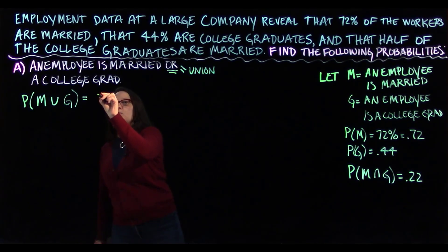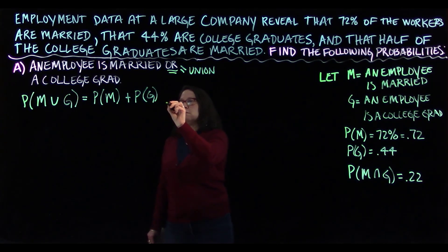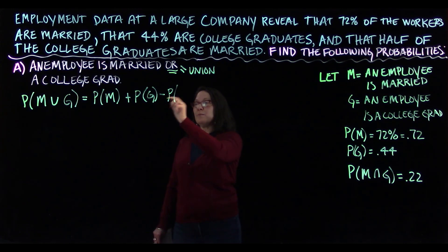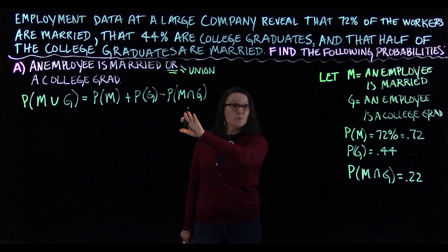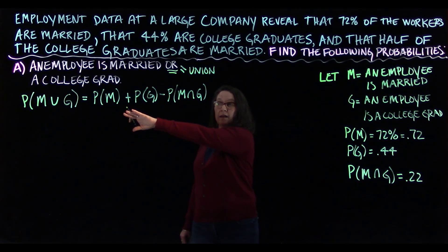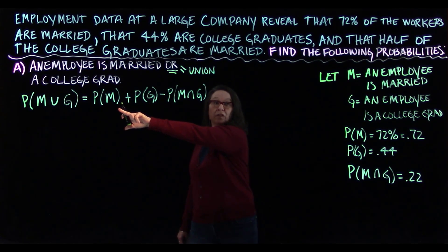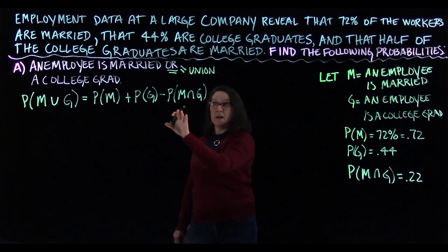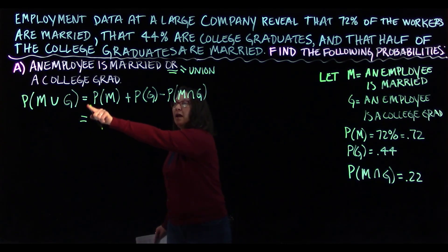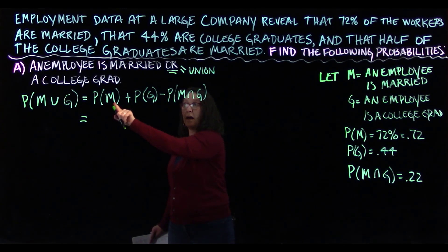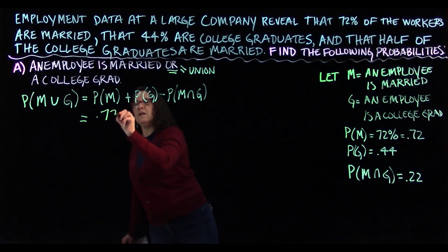From section 3.8, we add those probabilities together, but we've counted the probability of the married college graduates twice. So we have to subtract that overlap out once. That gives us the probability that the employee is married plus the probability they're a college graduate, minus the intersection. My equal signs are lined up as I go down, plugging into the individual quantities.